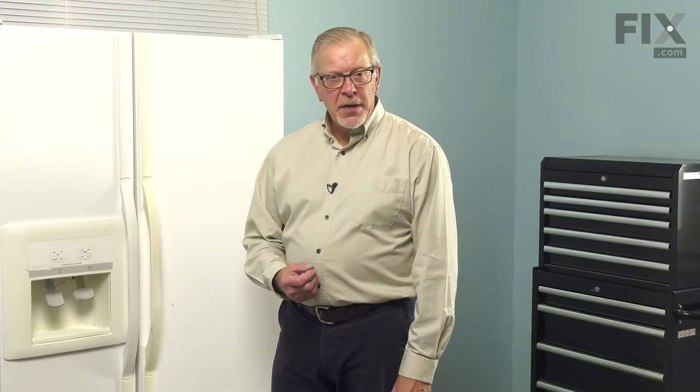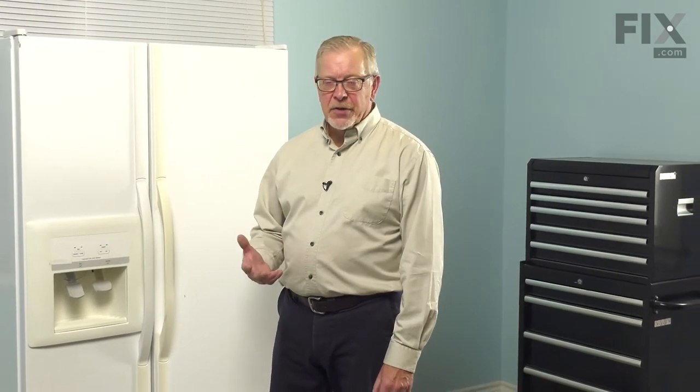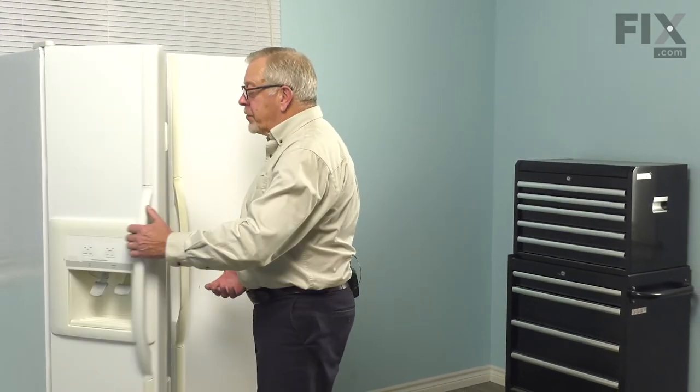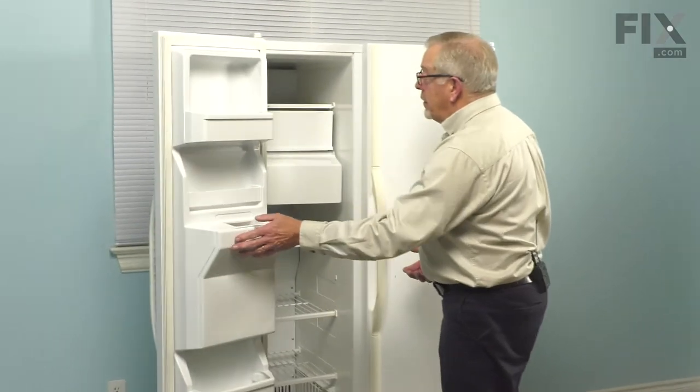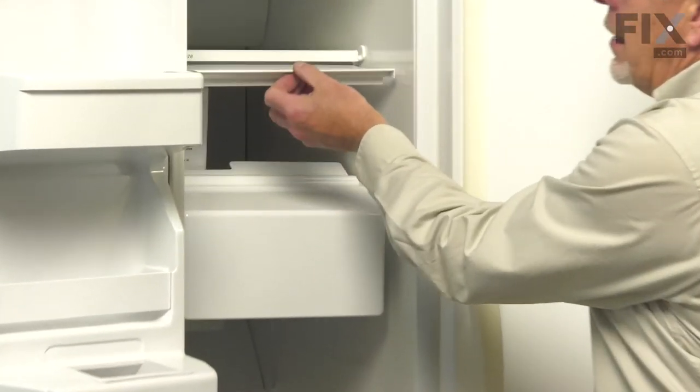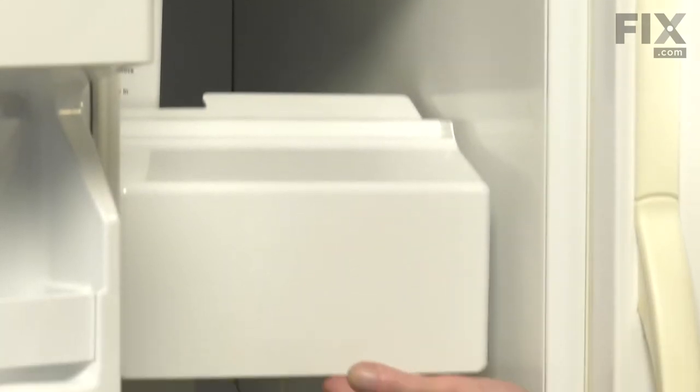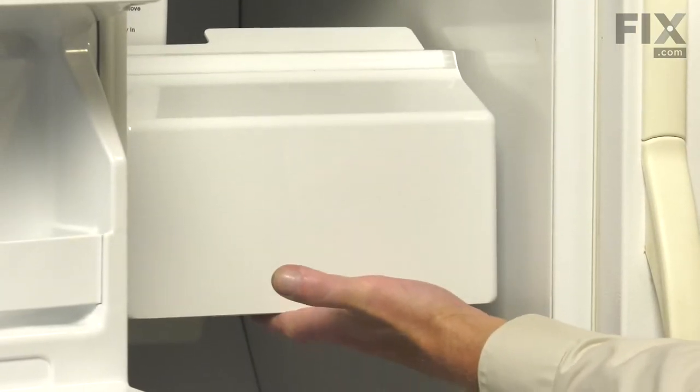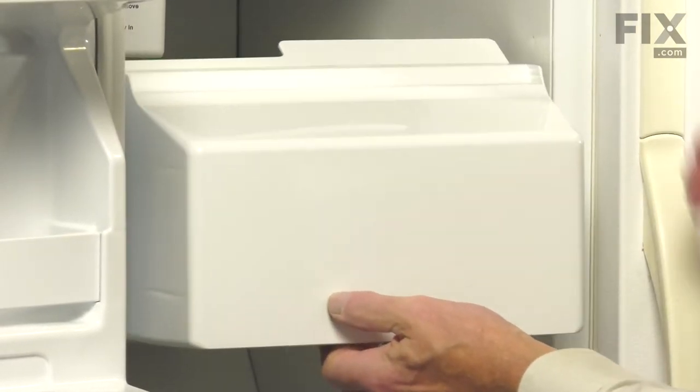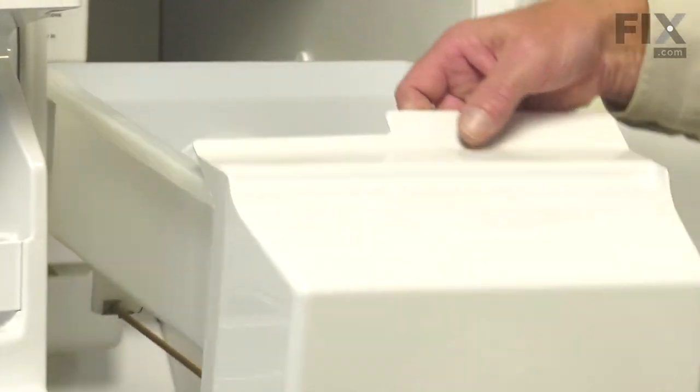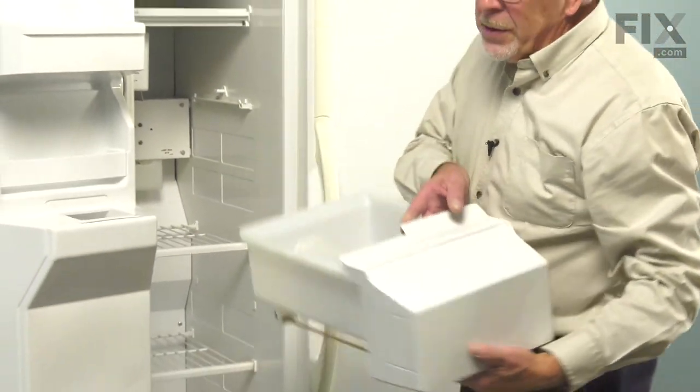Now, to replace the ice dispenser bin in your refrigerator, we'll begin by opening up the freezer door. You can lift the access door up and out of the way. We'll lift up on the front of the dispenser drawer, pull it all the way forward, and you can discard the old one.